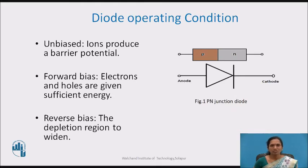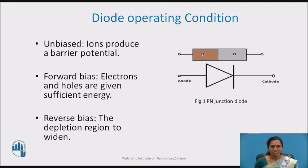As we know, where P and N type semiconductor materials are chemically combined together, they form a PN junction diode. It operates in three regions. The first is unbiased, where P and N type materials form a junction creating a barrier, where immobile ions create a barrier potential. So ions produce a barrier potential in the unbiased condition.